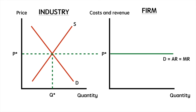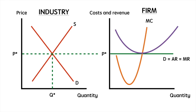Next, we include the firm's marginal cost curve as well as its average cost curve. The reason for the shape of these curves has been explained earlier — check the video description for links if you need a refresher. In order to profit maximize, this firm should produce where marginal revenue equals marginal cost. We look for the intersection of MR and MC and then drop down to the x-axis to find the firm's profit maximizing level of output, Q1.